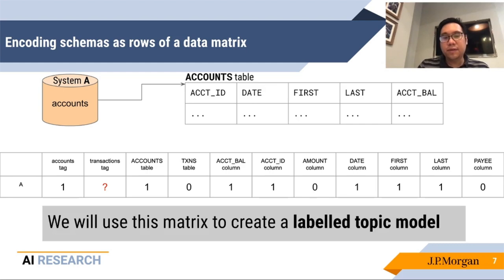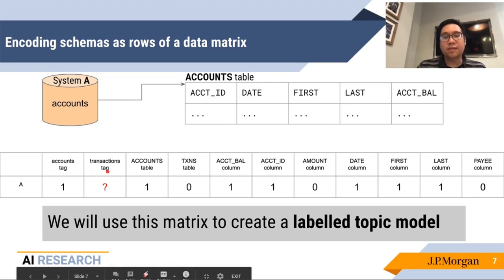If we know for sure that system A is not about transactions, we can set this to zero in our data matrix. Otherwise, we can leave this open and blank, and maybe we'll have a machine learning model help us figure out what this should be. So this thing is what we will use to create what is called a labeled topic model.